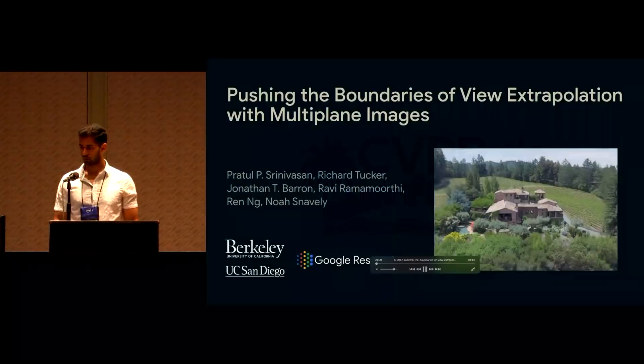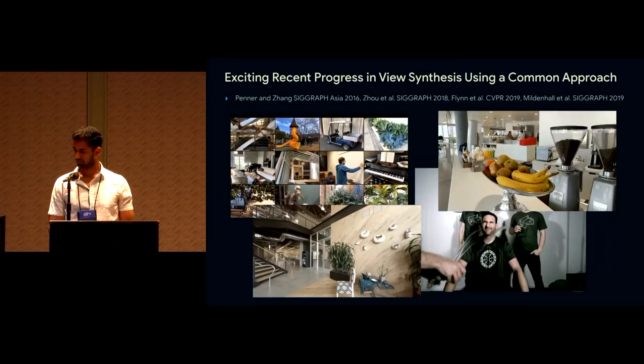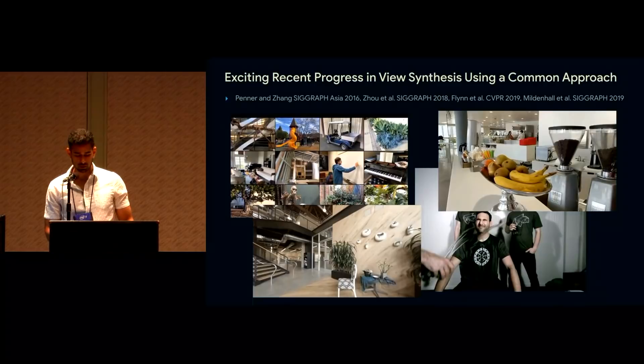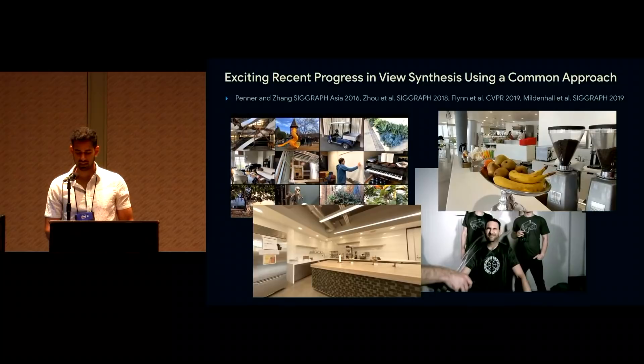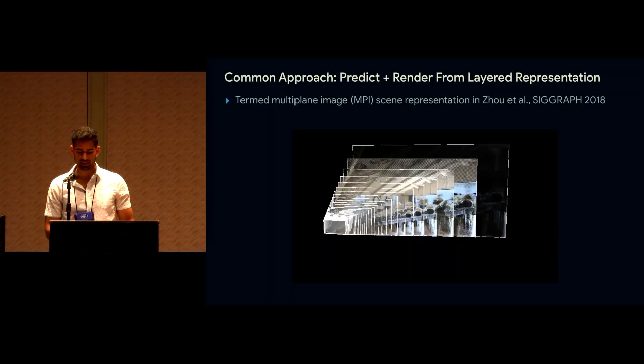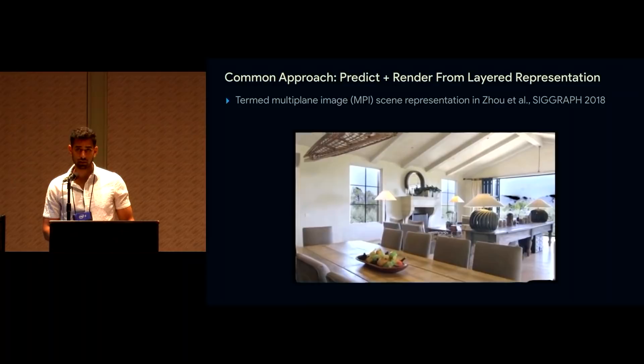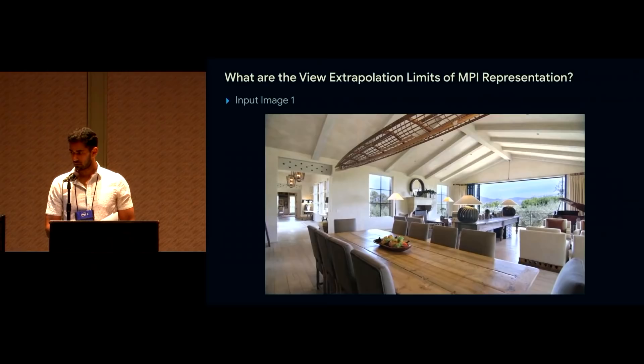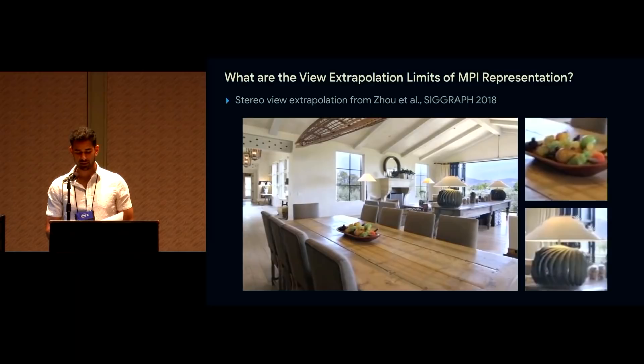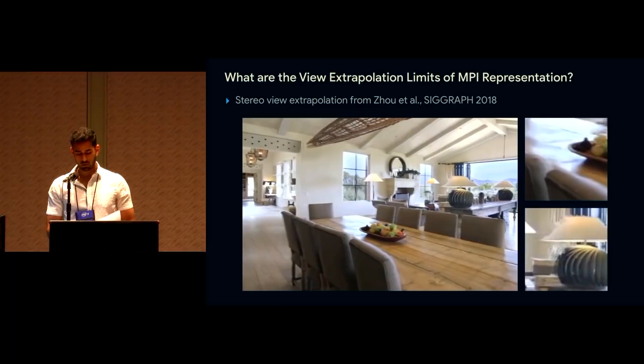Hi, I'm Pratul and today I'll be talking about view synthesis. There's been a lot of recent progress, even including work at this conference, in using a specific approach to synthesize novel photorealistic views of scenes from a small set of captured images. This common approach shared by many recent view synthesis algorithms is that they predict color and alpha layers sampled within a reference camera frustum and render novel views by warping and compositing these layers. This representation is based on early work in volume rendering and was more recently called a multi-plane image or MPI in a paper that trained a deep network to predict an MPI from a stereo pair using only the loss from rendering a held-out novel view as supervision.